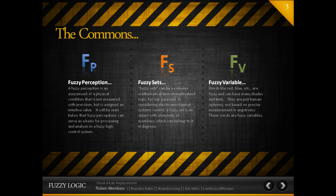Fuzzy sets can be a mathematical term, but for our purposes in this presentation, a fuzzy set is an object with elements or members which can belong to it in degrees. Fuzzy variables are words like red, blue, etc. These words are just human opinions that are not based on precise measurements — they are just variables.